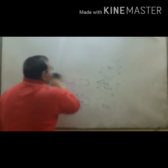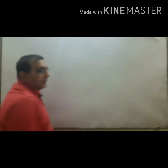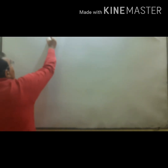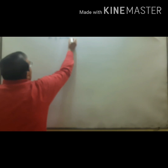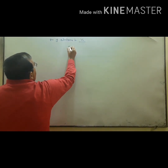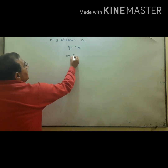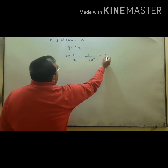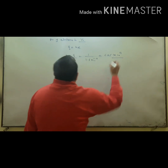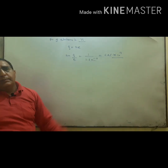Calculate the number of electrons in one coulomb of charge. Using N = Q/e = 1 / (1.6 × 10⁻¹⁹) = 6.25 × 10¹⁸. So the number of electrons in one coulomb of charge is 6.25 × 10¹⁸.